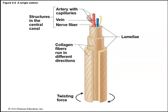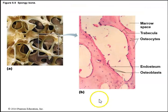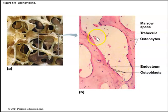Spongy bone is less complex than compact bone. It has beam-like trabeculae containing layers of lamellae and osteocytes, but the trabeculae are too small to contain osteons. The trabeculae are covered with a layer of endosteum containing osteoblasts for forming new bone, with mature osteocytes within the solid portions.